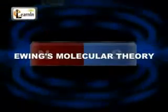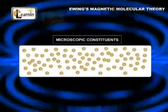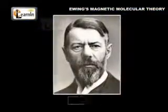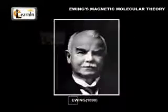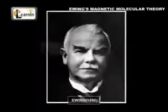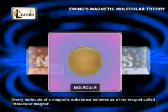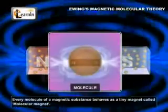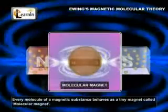Ewing's molecular theory: the idea that magnetism of a substance originates in the microscopic constituent of matter was first proposed by Weber in 1852 and was later developed by Ewing in 1890. According to Ewing, the microscopic constituent is a molecule. Every molecule of a magnetic substance behaves as a tiny elementary magnet called a molecular magnet.